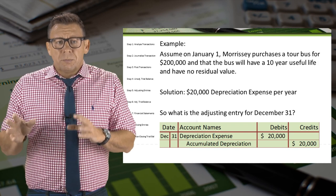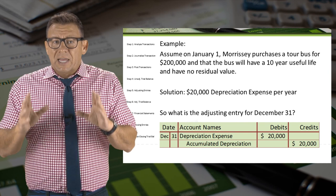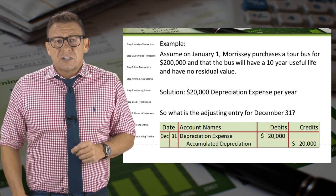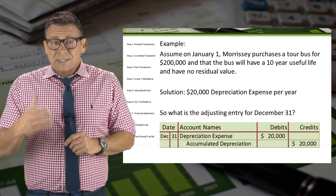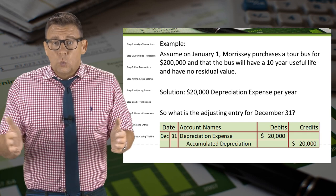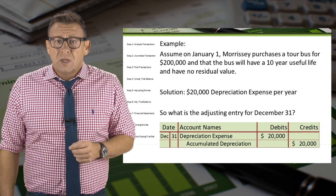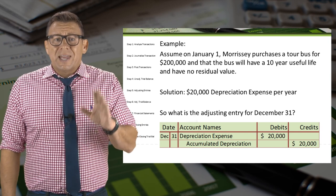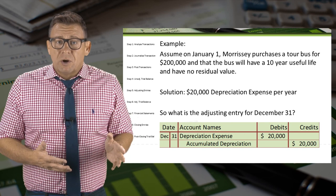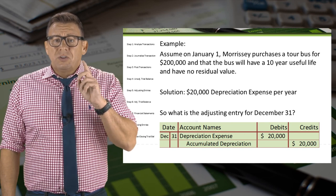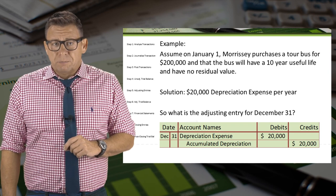But that is not correct for tangible assets with long lives. A long-term tangible asset like equipment still physically exists after it's been fully depreciated. This is different than supplies, which do not exist once they've been fully used up. Thus, we cannot credit the equipment account until that balance is zero. We need to use a new account called accumulated depreciation.